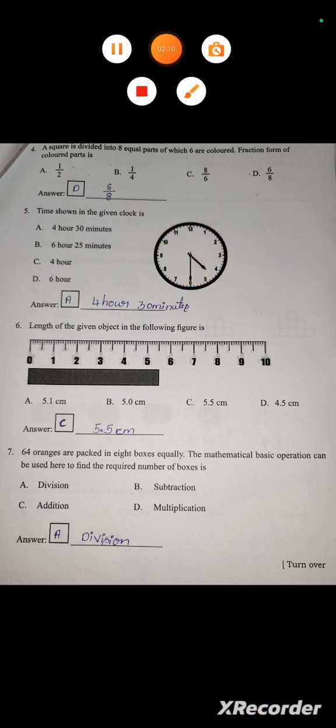The time shown in the given clock is 4:30. So the short hand is at 4, the hour hand is at 4, the minute hand is at 6. So 4 hours 30 minutes.